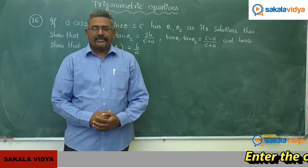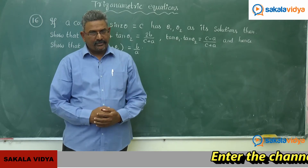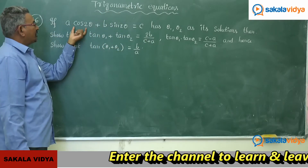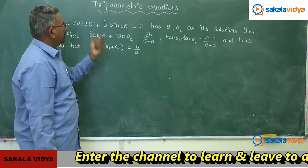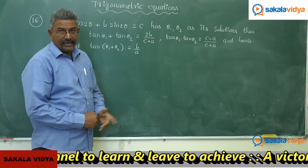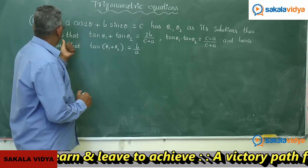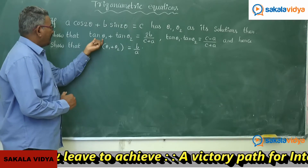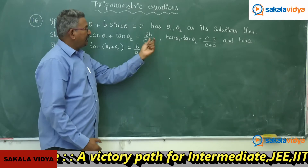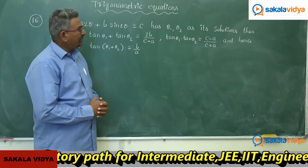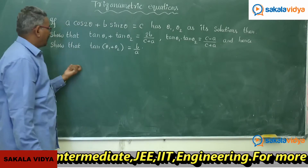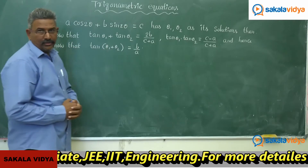Let us solve one more problem in trigonometric equations. Let us observe the question first. If a·cos2θ + b·sin2θ = c has θ₁, θ₂ as its solutions, then show that tan θ₁ + tan θ₂ = 2b/(c+a), tan θ₁ · tan θ₂ = (c−a)/(c+a), and hence show that tan(θ₁+θ₂) = b/a.